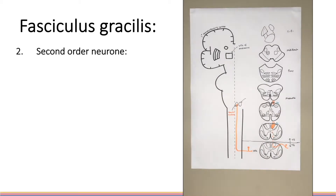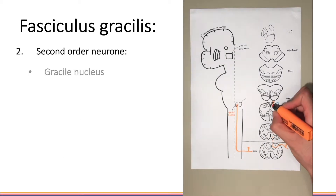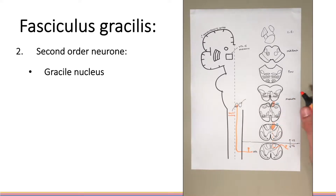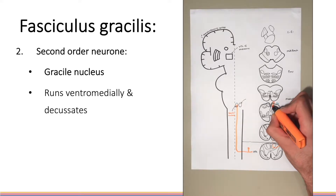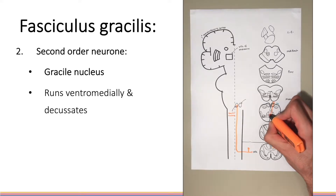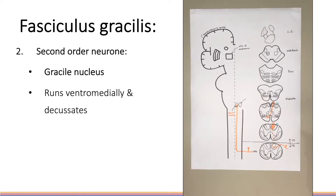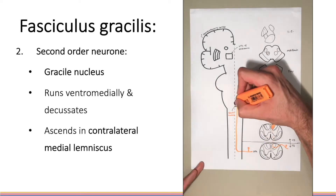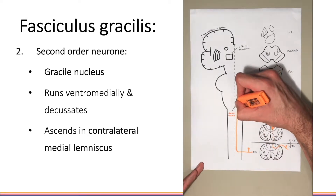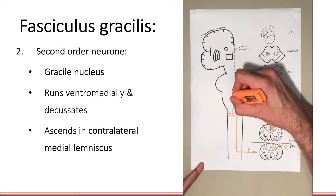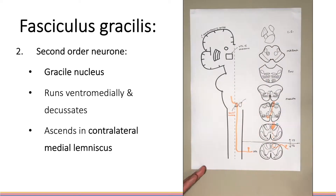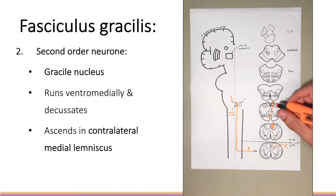The first order neuron synapses with the second order neuron in the gracile nucleus. The second order neuron runs ventromedially as the internal arcuate fibres across the midline to enter the contralateral medial lemniscus. Here you can see the second order neuron decussating in the medulla.